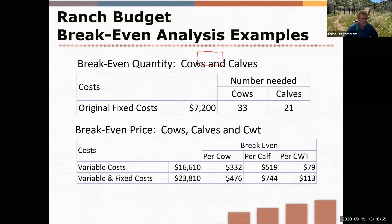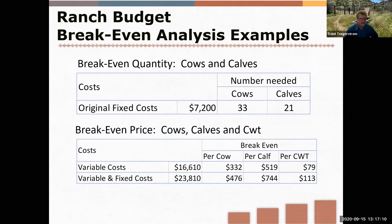This slide highlights the break-even on quantity of cows and calves. Here are the 33 cows and 21 calves from the original fixed cost. This also shows break-even price per cow, per calf, and per hundredweight. This uses variable cost alone or variable plus fixed cost for the whole operation. You can see the difference — these are the break-even prices you're going to need.